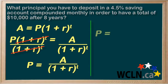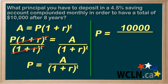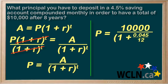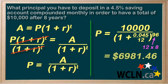Let's plug in some numbers. Our amount is $10,000 because that's what we want in the end. 1 plus our interest rate — it's 4.5% per year and we are compounding monthly, so we put 0.045 divided by 12, to the power of 12 times 8 years, which equals 96. Plugging all that into our calculator gives a final result of $6,981.46.